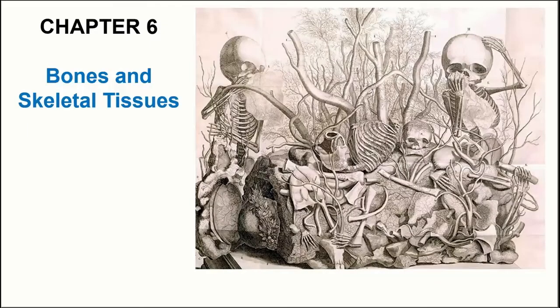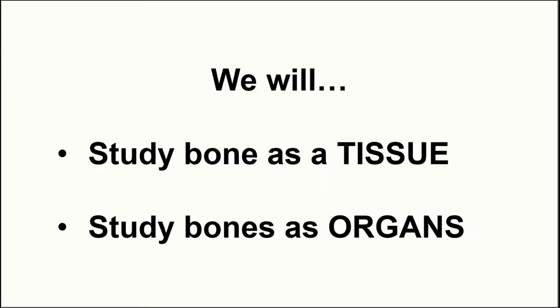In chapter six, the topic will be bones and skeletal tissues. Here we'll look more at what bones are made of, rather than the specific bones and their names — that'll be chapter seven. We're going to study bones from two perspectives: as a tissue, or bony tissue, and also as organs, because bony tissue along with associated structures like blood vessels and nerves means that whole bones are actually organs.